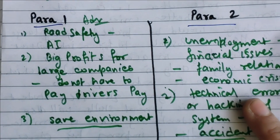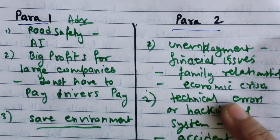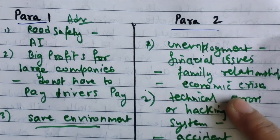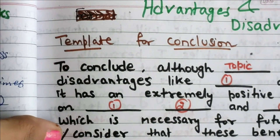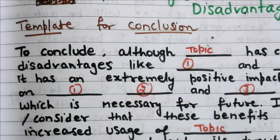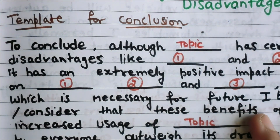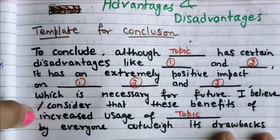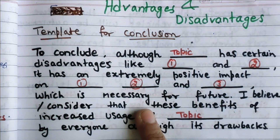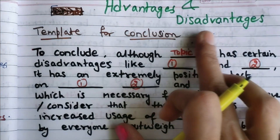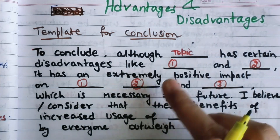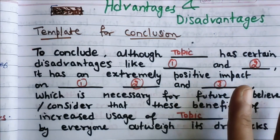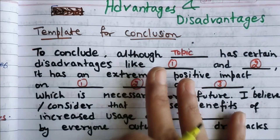Now my next point is how to write the conclusion — the template. There is no harm in using this kind of template, as long as you are putting your points properly. You can take a screenshot of it. There is no harm using this template for advantages-and-disadvantages outweigh questions, as well as normal advantages and disadvantages questions.